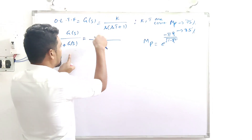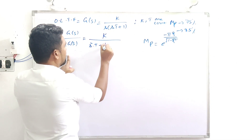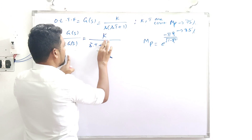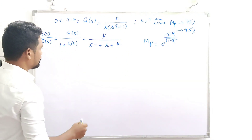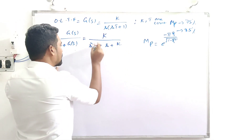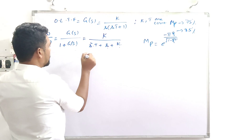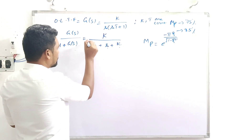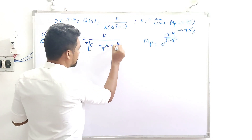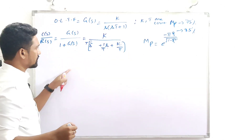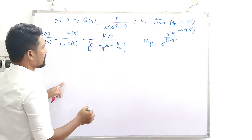After substitution and cancellation, the closed-loop transfer function simplifies. Taking T as common from all three terms, the numerator becomes K/T. The denominator terms also simplify accordingly, giving us the standard-looking second-order form.